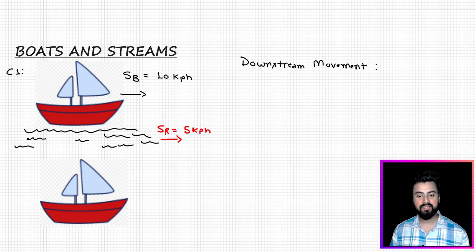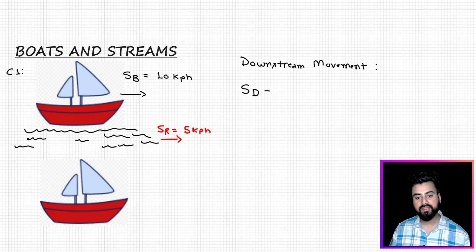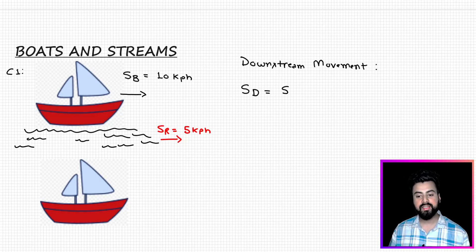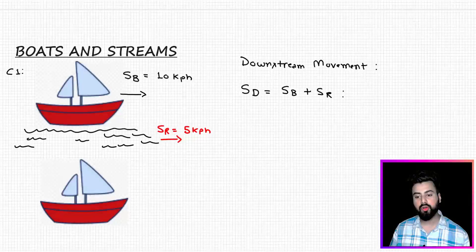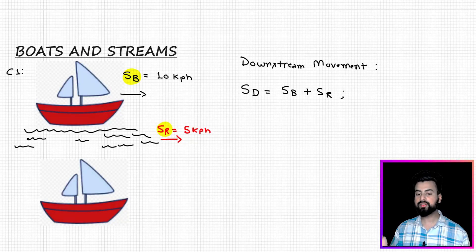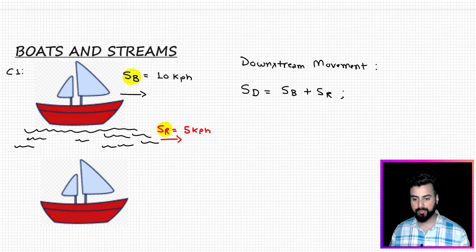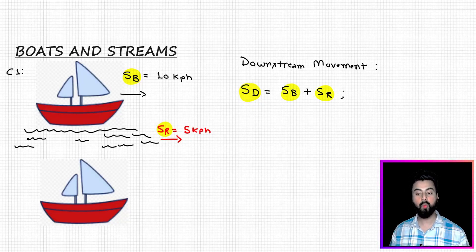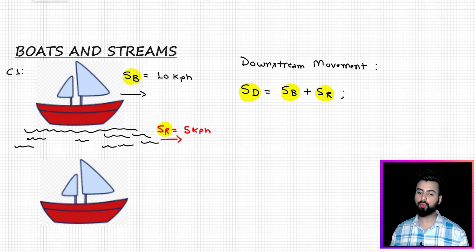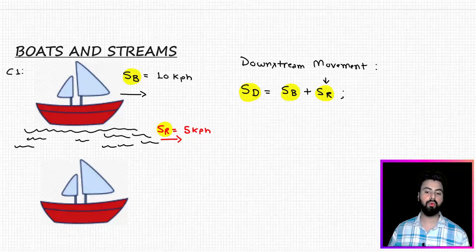The speed applicable in this case is called speed downstream, represented as Sd. To calculate speed downstream, it's simply the addition of two speeds: speed of boat plus speed of river. The flow of the river is going in the same direction as the boat, so it speeds up the boat. That is why we add speed of river and speed of boat to get speed downstream.